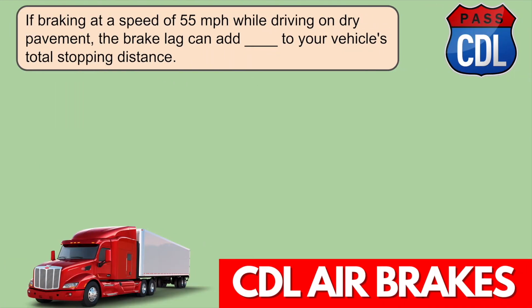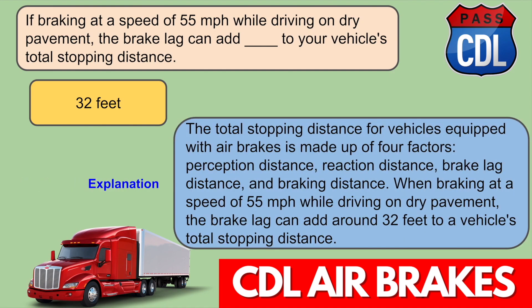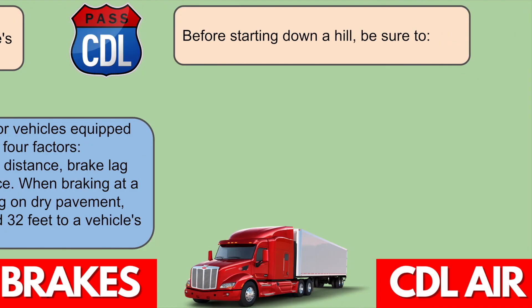If braking at a speed of 55 miles per hour while driving on dry pavement, the brake lag can add around 32 feet to your vehicle's total stopping distance. The total stopping distance for vehicles equipped with air brakes is made up of four factors: perception distance and braking distance.